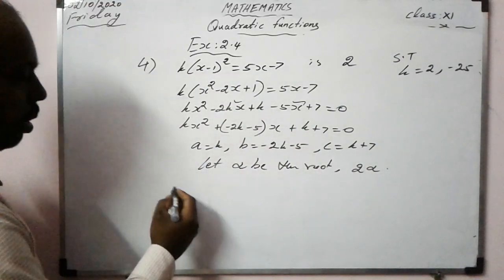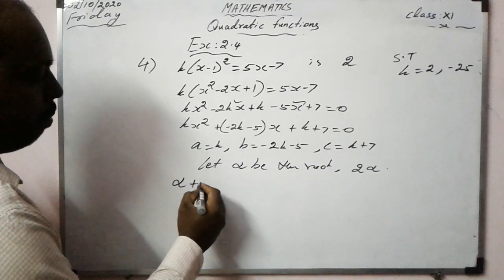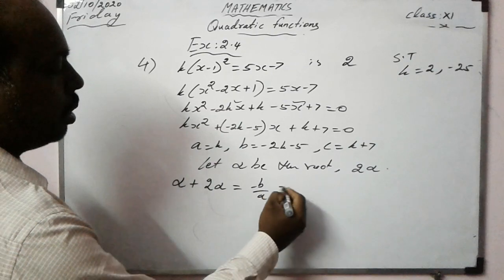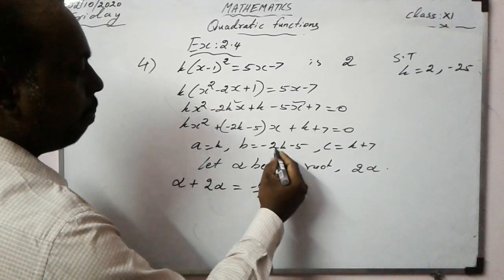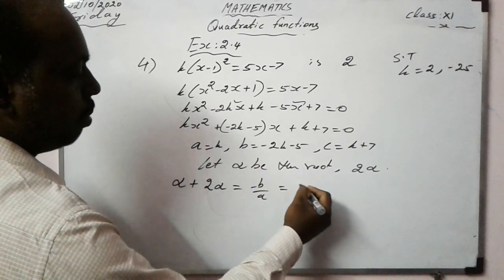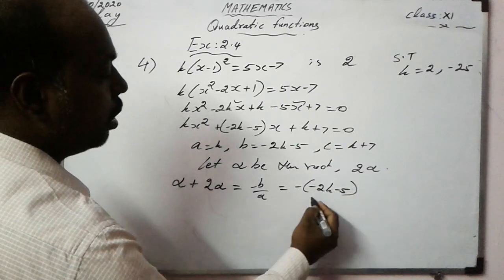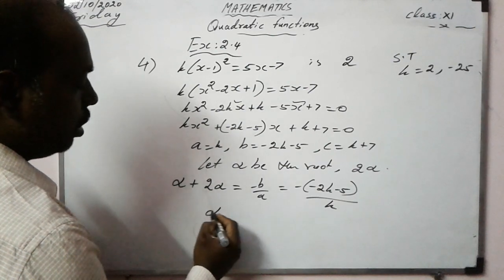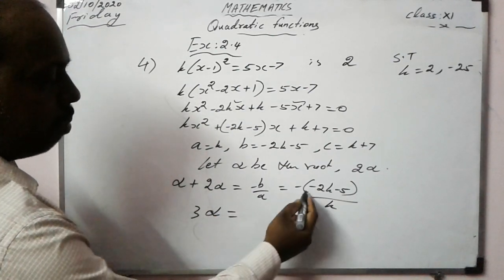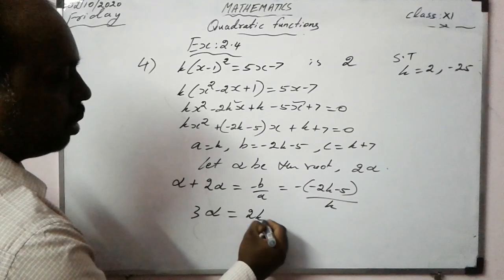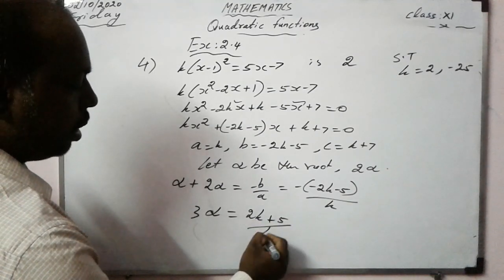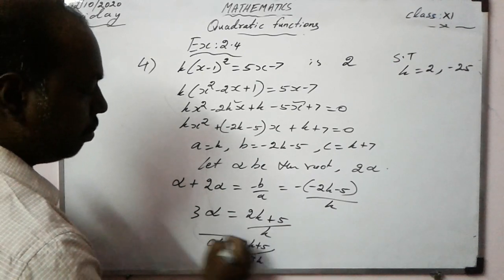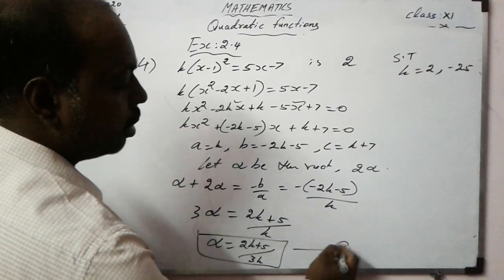Sum of roots: alpha + 2·alpha = -b/a = -(-2k-5)/k = (2k+5)/k. So 3·alpha = (2k+5)/k, giving alpha = (2k+5)/(3k). Call this equation 1.